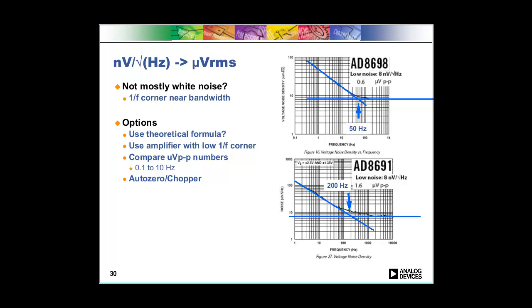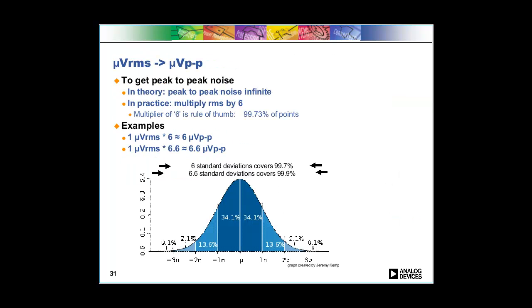You can use the more theoretical formula, but to be honest it may be the best thing to just go check it out in the lab and see how it performs in your system. One-over-f noise does tend to vary a little bit more than white noise, so even if you're super accurate in your calculations you might find that in real life you've got a little bit of variability anyway.